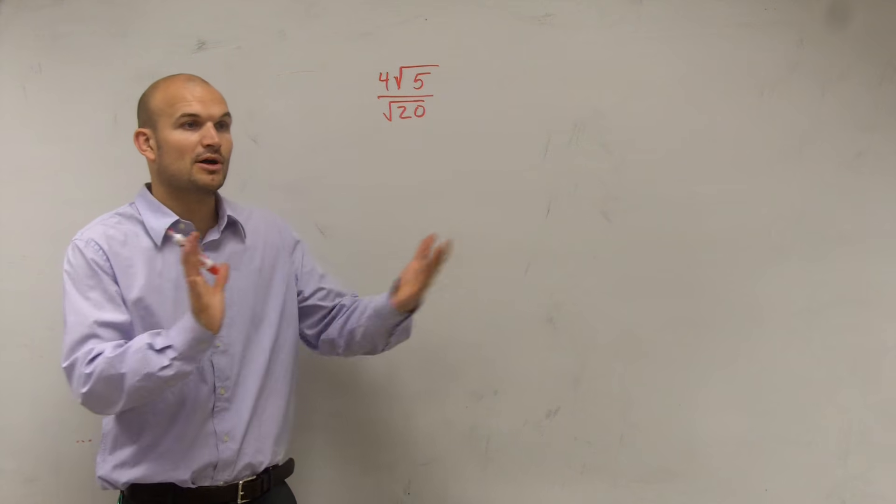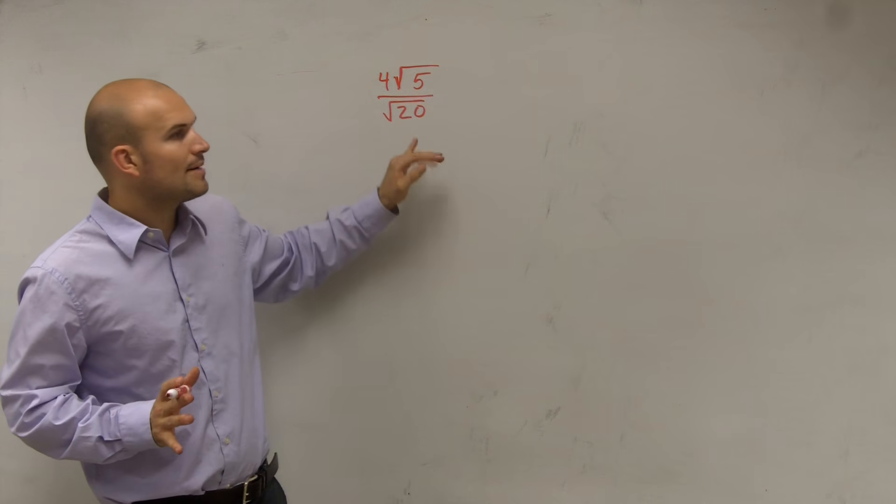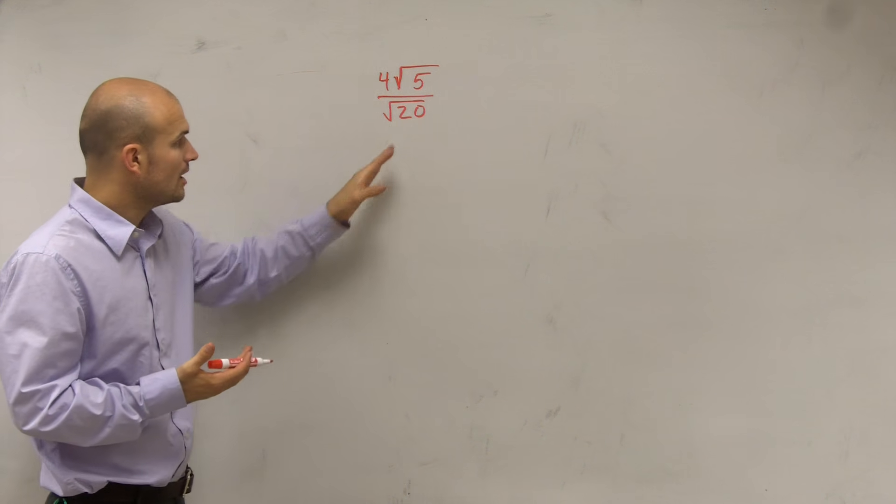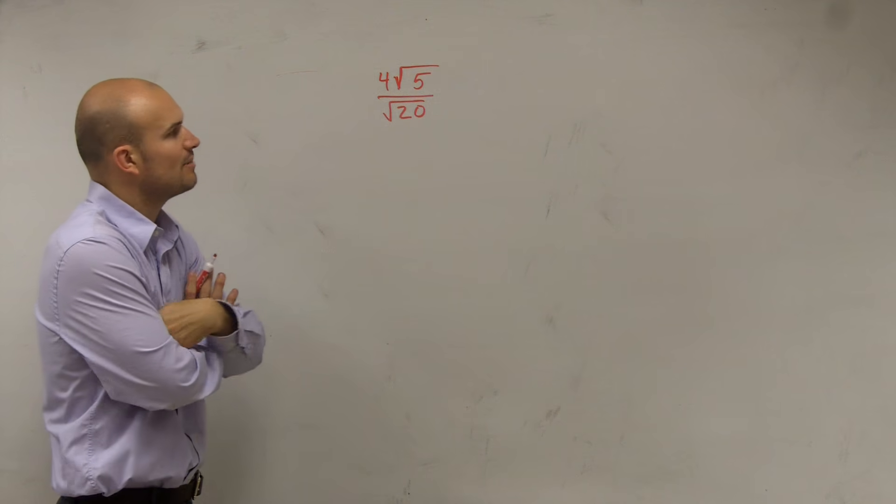Well, the same thing, when we're multiplying, we can multiply across. However, we have a problem here. If we're going to be dividing, when we're dividing, one thing is we can't divide by our radical.